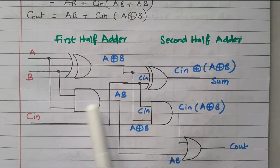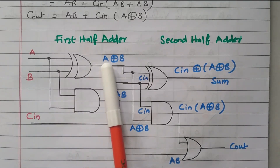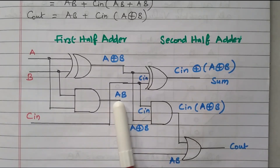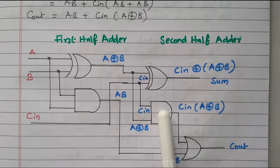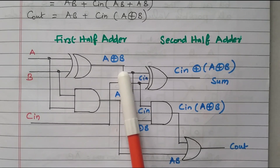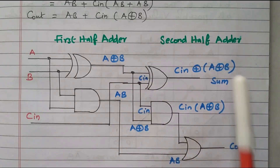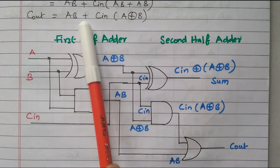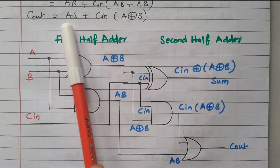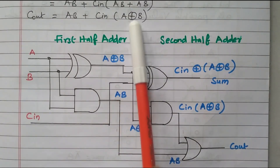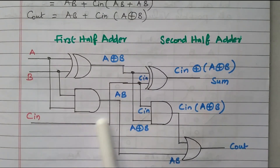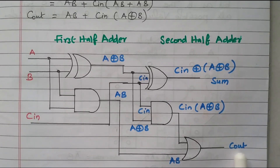To summarize the two-half-adder construction: the first half adder takes inputs A and B — XOR gate gives A XOR B (sum), AND gate gives A·B (carry). The second half adder takes A XOR B and Cin as inputs — XOR gate gives the full adder sum, AND gate gives Cin·(A XOR B). Finally, an OR gate adds A·B and Cin·(A XOR B) to produce Cout. So both sum and Cout of the full adder are obtained using two half adders and one OR gate.